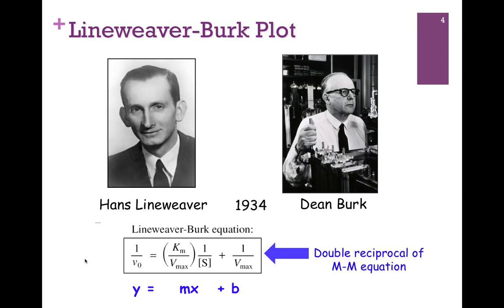Now we want to develop a way to more accurately determine Km and Vmax. We saw we could estimate them from the graph, but that's not very accurate. Hans Lineweaver and Dean Burke in 1934 published an article where they simply rearranged the Michaelis-Menten equation — illustrated at the bottom of the screen here. This is called the Lineweaver-Burk equation. They took the inverse of both sides and rearranged it; this is called the double reciprocal of the Michaelis-Menten equation. As you can see, it's simply the equation for a line: plotting 1/V0 versus 1/[S], the slope is Km/Vmax and the y-intercept is 1/Vmax.